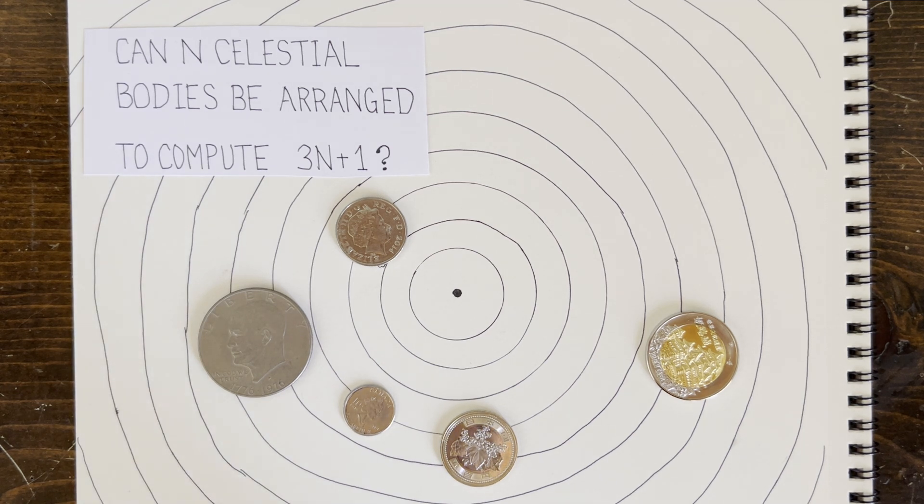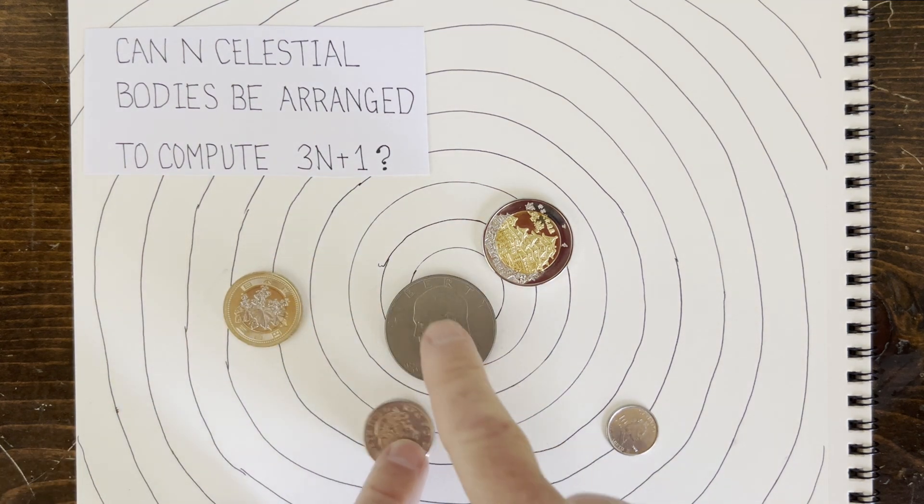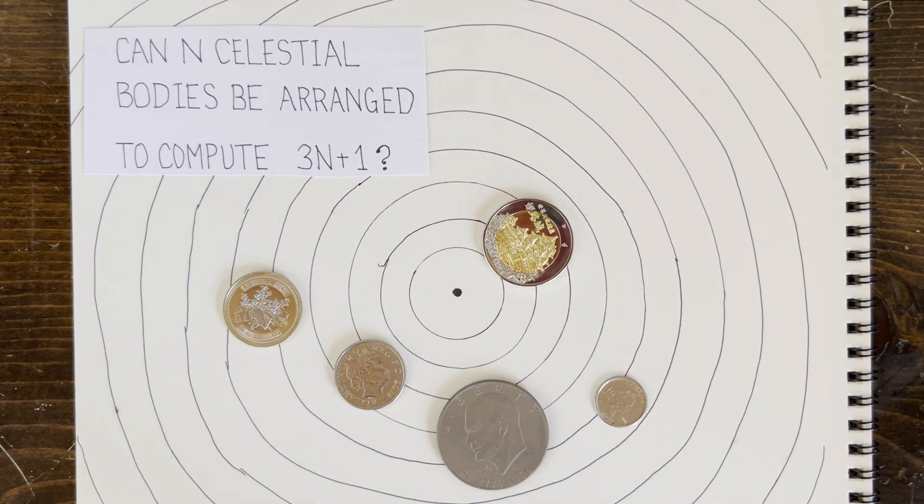Hey, here's a goofy food-for-thought question for you. Can n celestial bodies be arranged in space to compute 3n plus 1 trajectories?